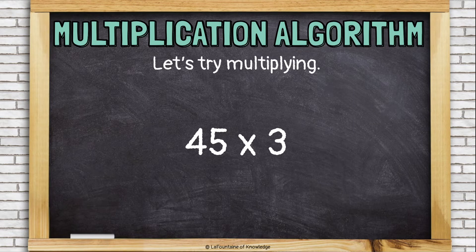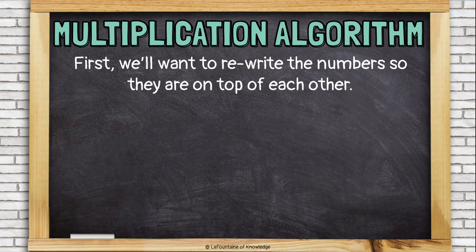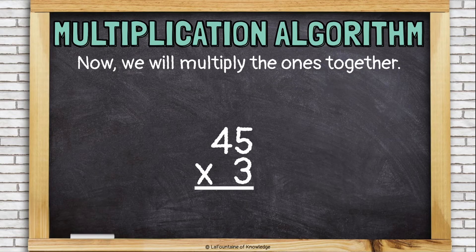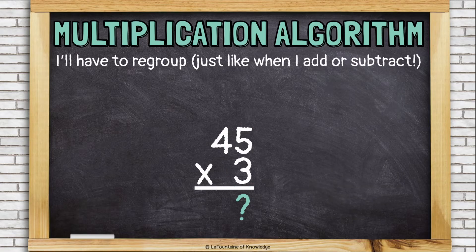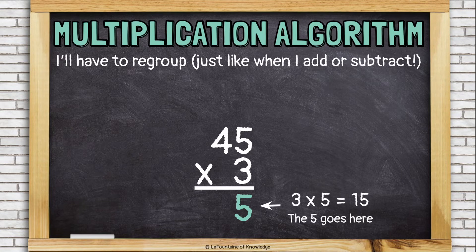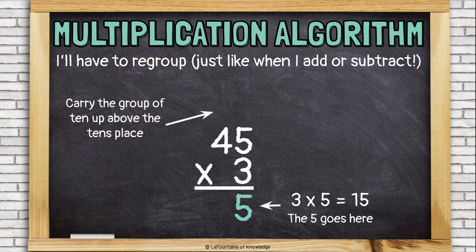So we're going to try to multiply 45 times 3. Remember, first we have to line the numbers up on top of each other like this. Then, we start multiplying. We're going to multiply the 3 times the 5 like this. 3 times 5 is 15. But I can't put a 15 in the ones place of my answer. That won't work. So I need to regroup. This is just like when we add or subtract. I'm going to put the 5 in my answer. And I'm going to carry or regroup that group of 10 to above the tens place, because that's what the 1 is in the number 15 — it's just a group of 10. The 5 goes in the ones place of my answer and the 1 is carried up to the tens place above the 4.